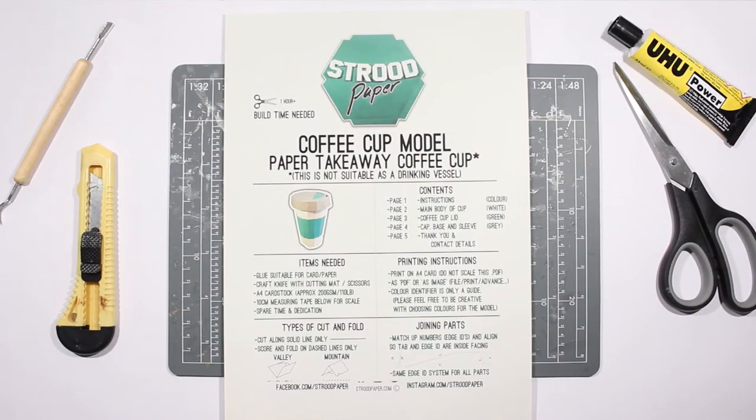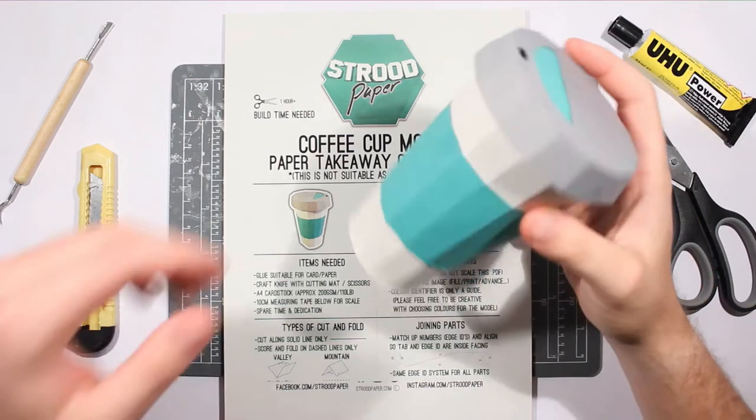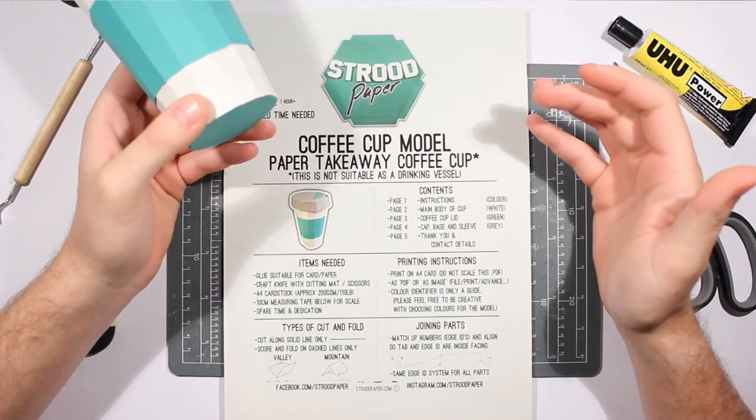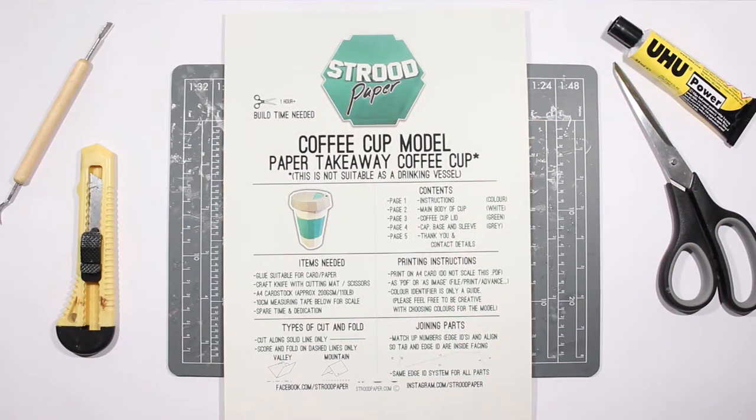Hello and welcome to another episode of Strewed Paper. This time we're going to make a coffee cup which is very similar to this one here. You can use it for decoration, props, or anything like that. So let's just dive right in.